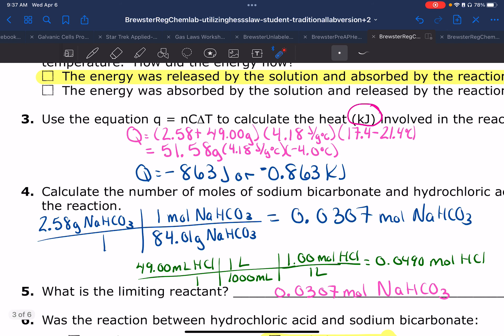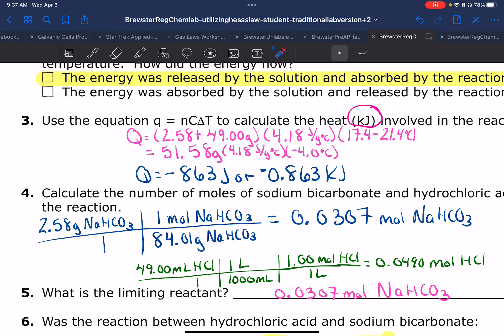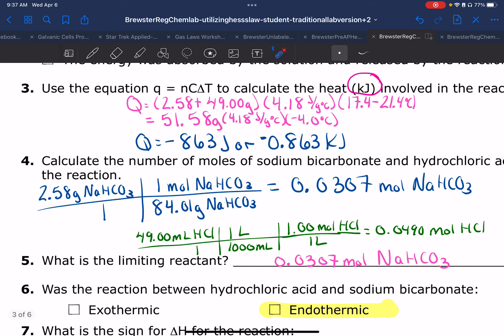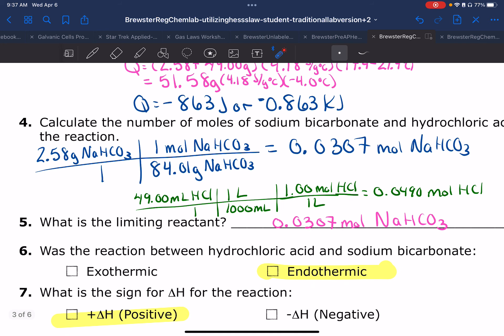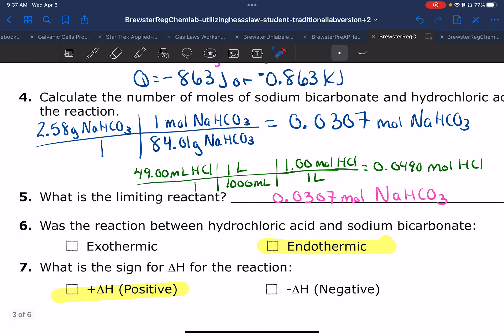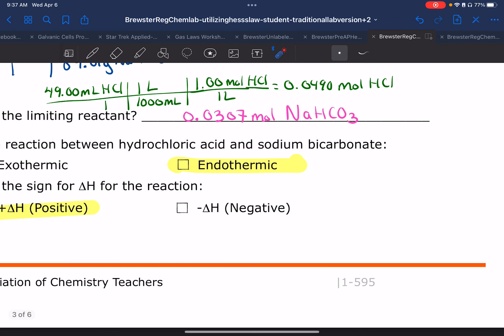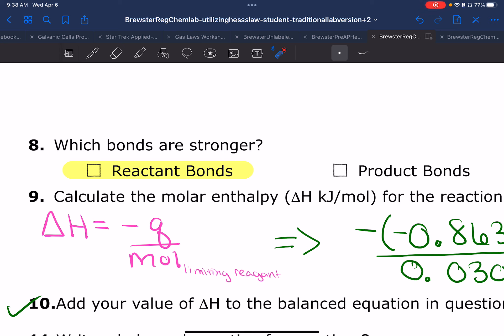So it asks: was the reaction between hydrochloric acid and sodium bicarbonate endothermic or exothermic? Hopefully you said endothermic since they got colder. And since it's endothermic, then the question comes down to: what is the sign for delta H? New material here - when I have an endothermic reaction, my delta H is going to be positive, because of the relationship between the Q and the delta H. When I have a negative Q, I have a positive delta H and vice versa. Then the next question was which bonds are stronger? Here I have an endothermic reaction, and I'm going to find out that my reactant bonds are stronger.